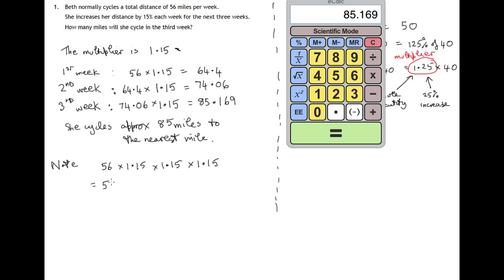You should be able to write 1.15 multiplied by itself three times as 1.15 cubed.